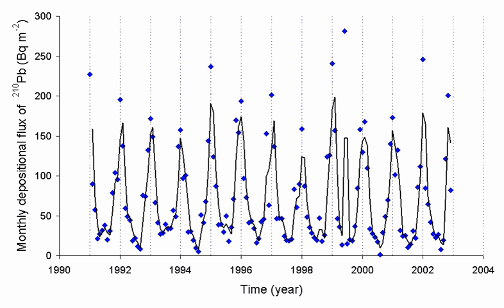It occurs naturally in minute quantities as an intermediate step in the normal radioactive decay chains through which thorium and uranium slowly decay into lead and various other short-lived radioactive elements. Radon itself is the immediate decay product of radium. Its most stable isotope, 222 Rn, has a half-life of only 3.8 days, making radon one of the rarest elements since it decays away so quickly.